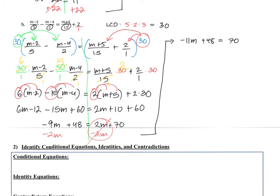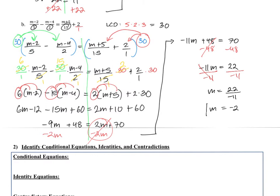Subtracting 48 from both sides gives negative 11m equals 70 minus 48, which is 22. To get rid of the negative 11, divide both sides by negative 11. That gives m equals 22 divided by negative 11, which is negative 2. And that's it — we are done.